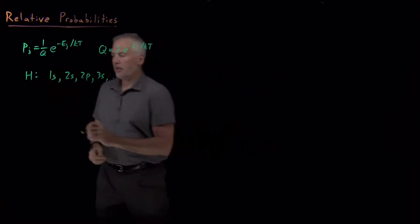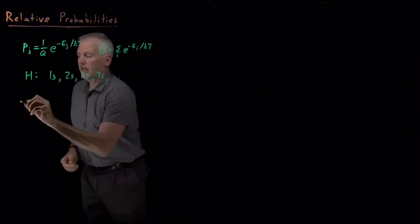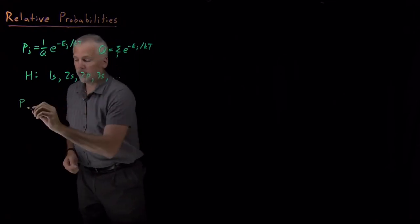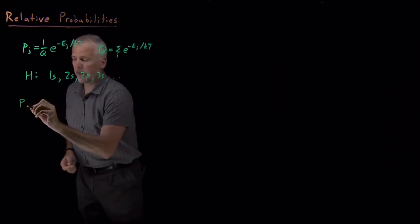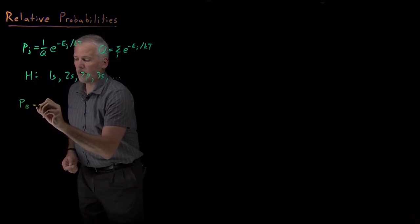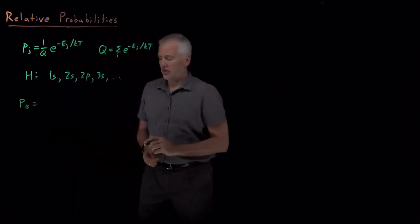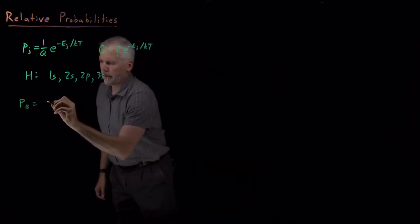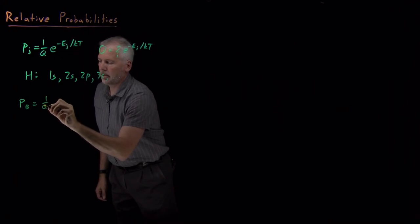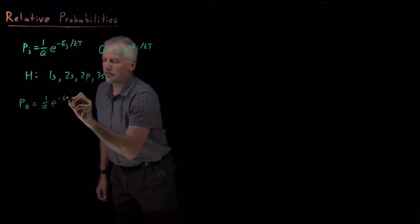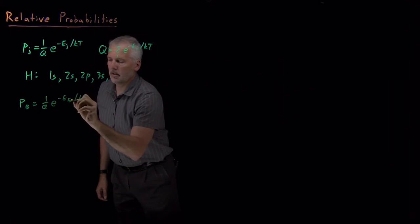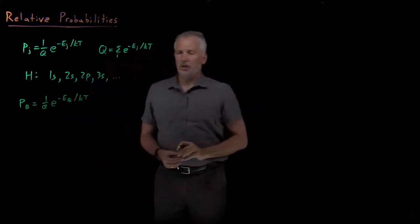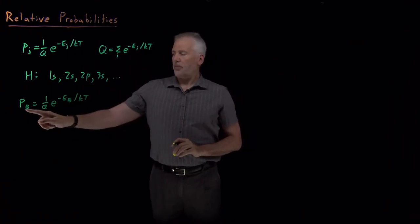So it turns out that when we don't know or can't know the energies of all the states, what we often want to do is calculate the relative energies of two different states. For example, let's call them state A and state B.